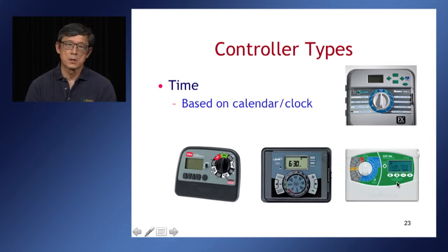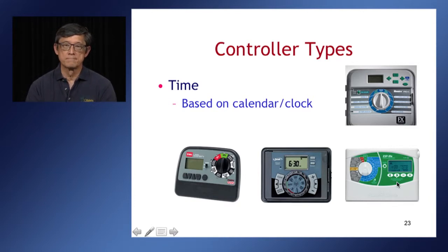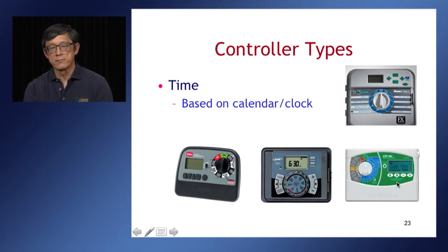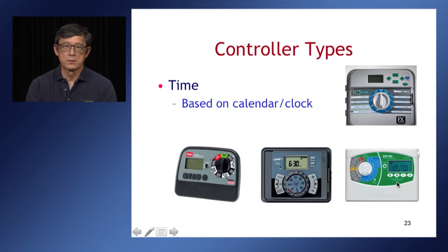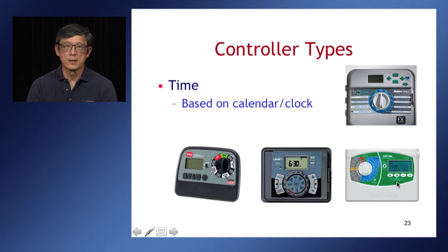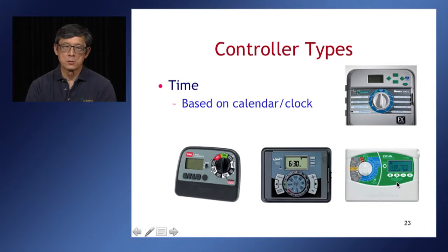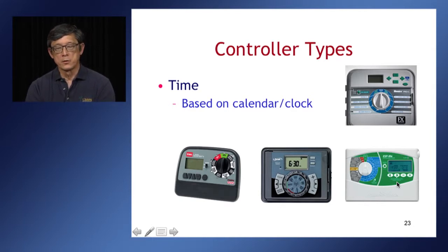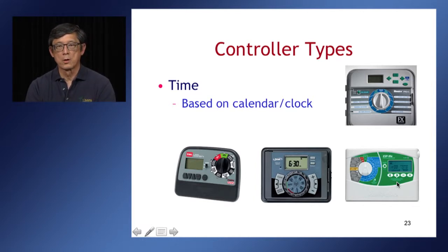Time-based controllers are the most common controllers — they're based on a calendar. You might program valve one to turn on for five minutes, valve three for seven minutes, and valve four for eight minutes, on Mondays, Wednesdays, and Fridays. Every Monday, Wednesday, and Friday it'll go through that cycle and turn on the valves accordingly. To make an adjustment, you have to physically go to the controller and adjust the days that irrigation occurs, or turn it off during the rain season.